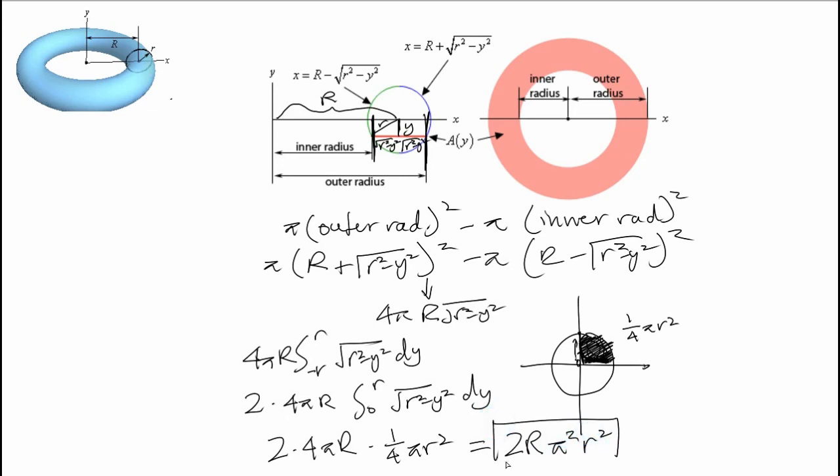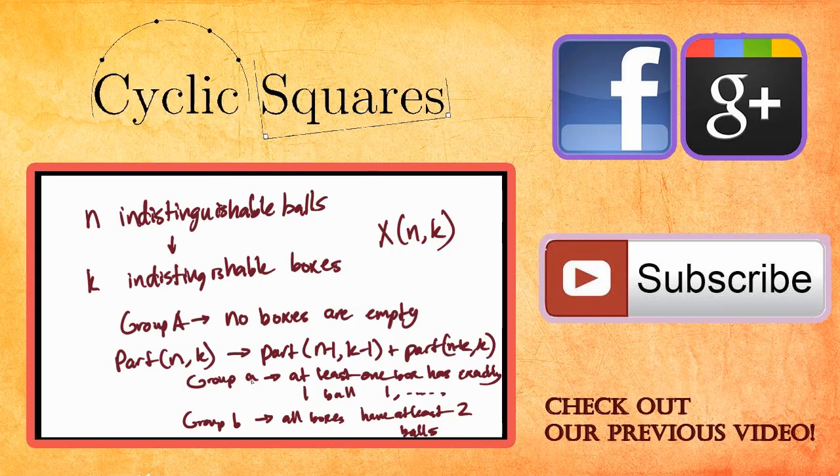So if you ever want to find the volume of your Krispy Kreme donut, you can just use this equation, capital R, little r, and that will give you the volume of a torus. I hope you liked the video, I'll see you next week.